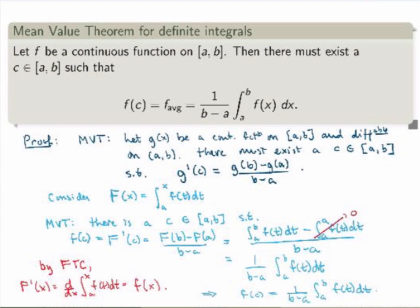The lesson of this proof is that the mean value theorem for definite integrals is not really a new theorem — it's a consequence of the old mean value theorem, just a new formulation. Instead of thinking in terms of secant lines and tangent lines, here we think in terms of integration: area under the curve and area of a rectangle. But the two theorems are really the same, which is why they're both called the mean value theorem.